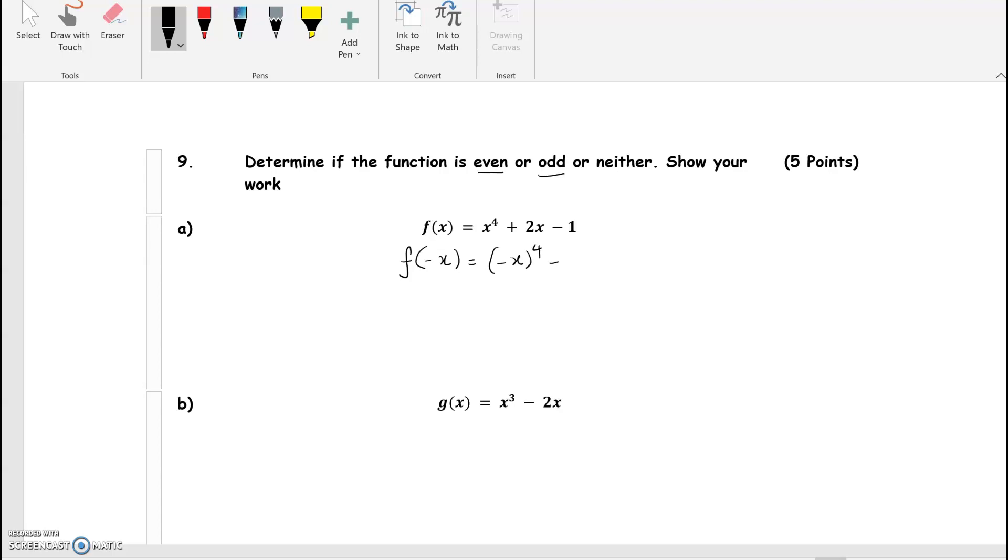So this is an even power, so it's equal to x to the fourth power minus 2x minus 1. So what does that tell us? Let's check conditions first.